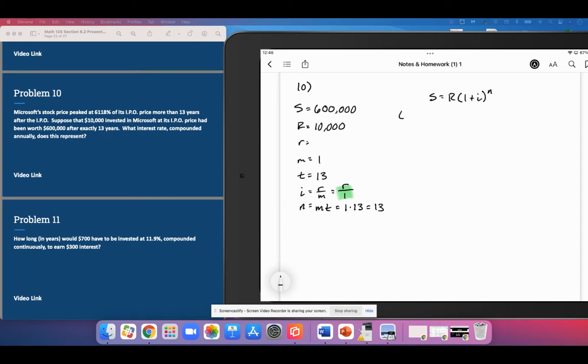And I'm going to use 600,000 equals 10,000 times 1 plus, I is R over 1. And again, it's okay to leave that like that, and 13 is our exponent up there.